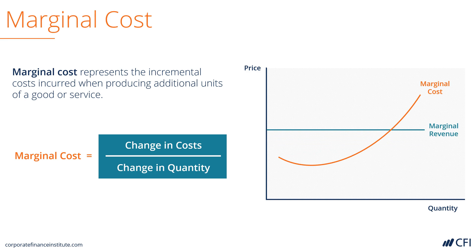The marginal revenue is the amount of money that the firm receives from producing more units. The point at which marginal cost and marginal revenue meet is where a firm maximizes its profits. It will stop producing goods when the marginal cost rises above the marginal revenue, as it would be making those units at a loss.